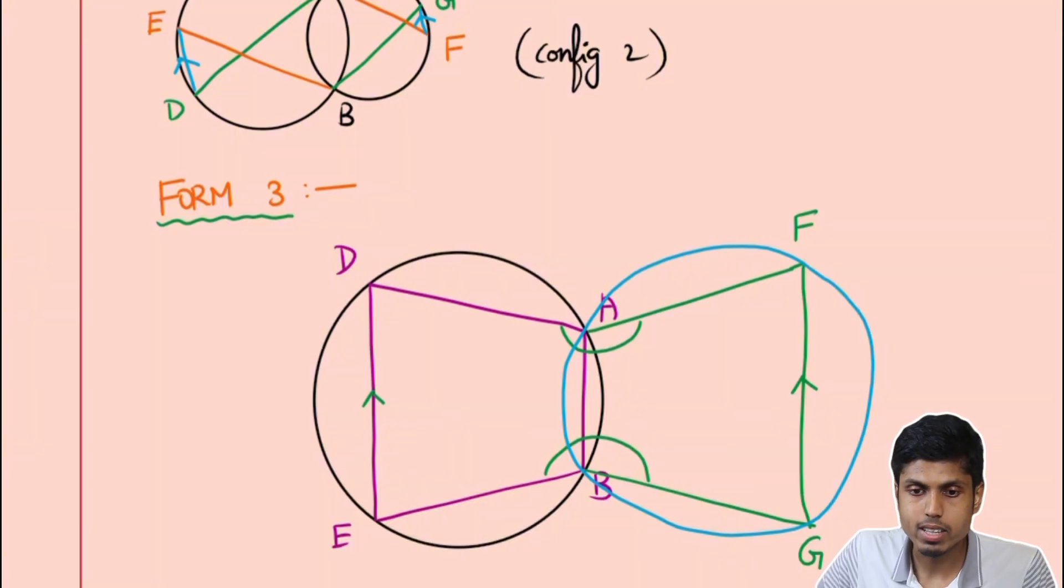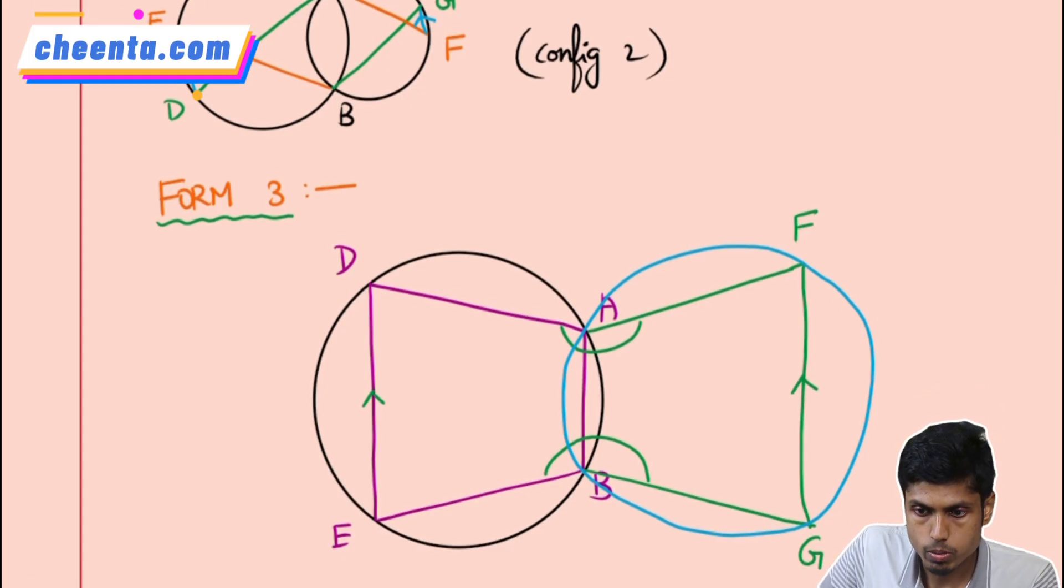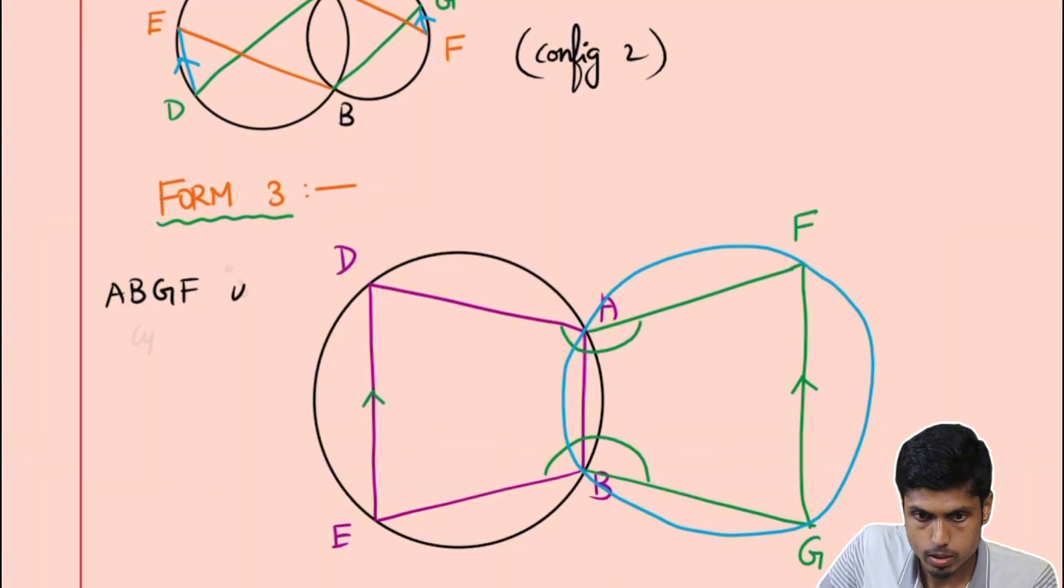So this is like a slight variation of form 2, or in other words the converse of form 2. Let's think about it. So we have to prove ABGF is cyclic. Again a bit of angle chase would do good for us.